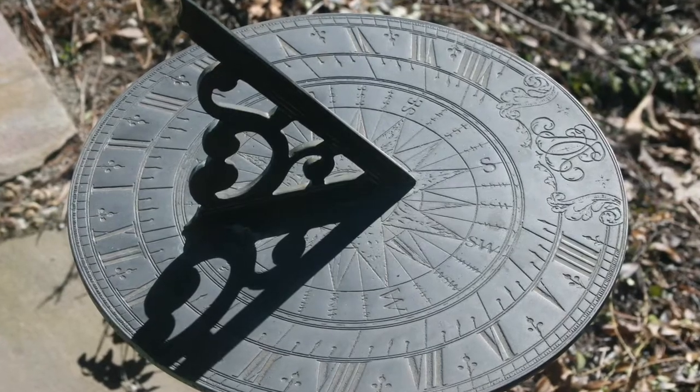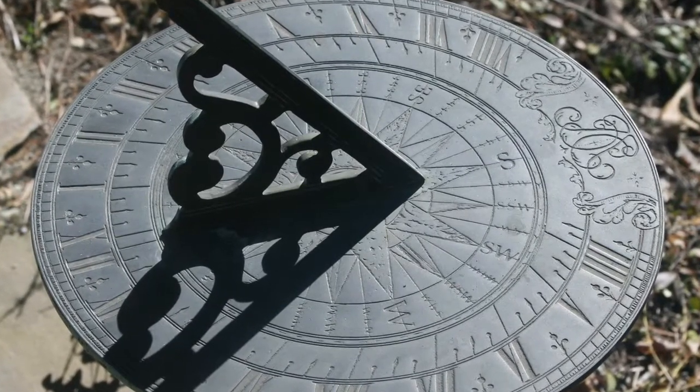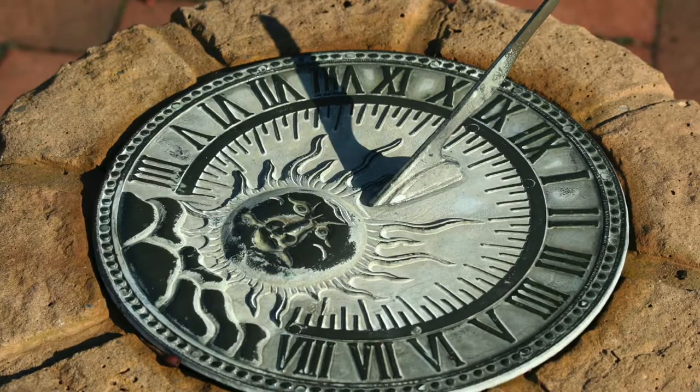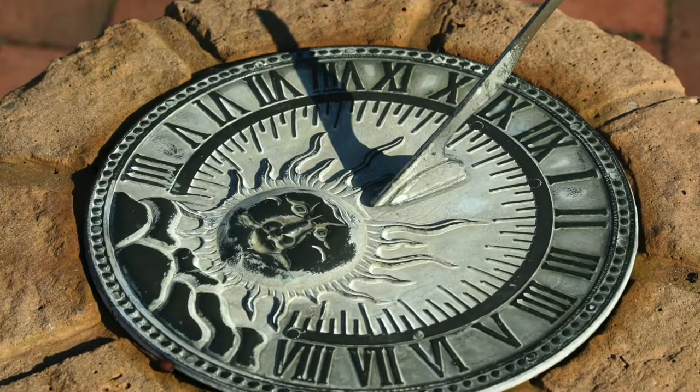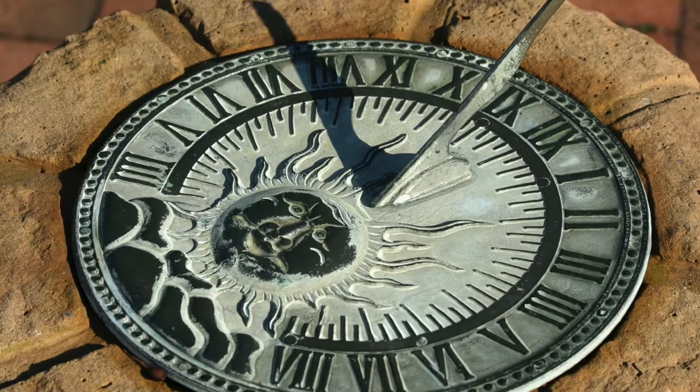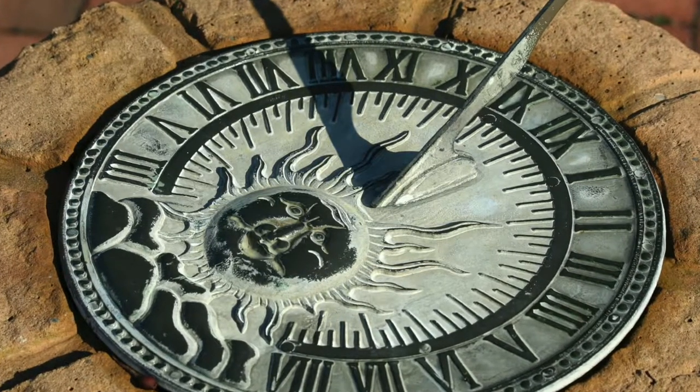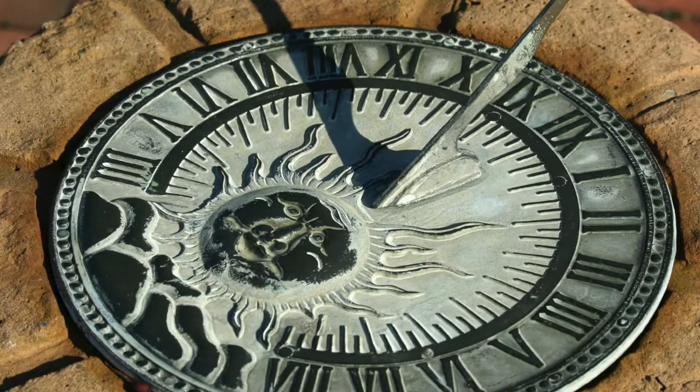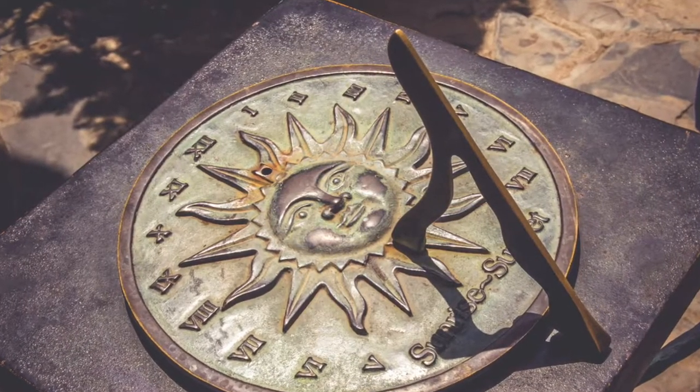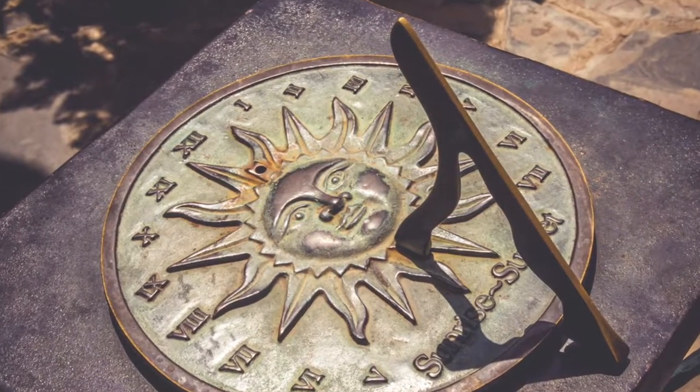We also use the sun to tell time. In the Roman Empire, a long time ago, they came up with something called a sundial or a sun clock. This sundial uses shadows from the light of the sun to tell what time it is. Today, you're going to get the chance to make your very own sundial.